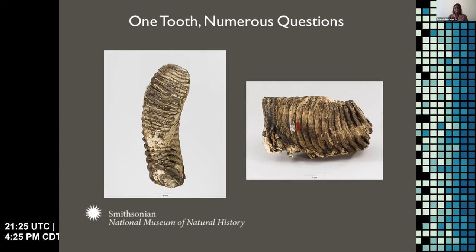I'll conclude by answering the high school students' questions. Is this one tooth? Yes. How did mammoth teeth grow? A new tooth grows from the rear of the jaw and the old tooth is lost from the front. How many teeth did mammoths have? Four at a time, with a maximum of six sets. Did mammoths have baby teeth? Yes. How big was a mammoth? 13 feet tall, or four meters. How old is that tooth? This tooth has not been radiocarbon dated, but other mammoths found at Lamb Spring have dated to slightly over 13,000 years.